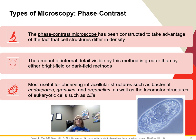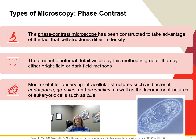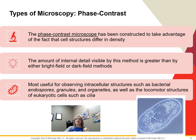When structures have differences in density, we can use a phase contrast microscope, which takes advantage of those density differences. It has a device that transforms changes in light passing through the specimen into different intensities of light. The amount of internal detail we can see is greater, so we use this for observing intracellular structures — things like endospores, organelles, granules, cilia, or flagella.